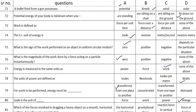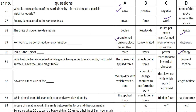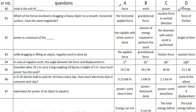The next one is: Joule is a unit of blank — and the answer is option D — energy. The next question is: which of the forces involved in dragging a heavy object on a smooth horizontal surface have the same magnitude? The answer is option D — force of friction. The next one: power is a measure of the blank — and the answer is option A — the rapidity with which work is done.